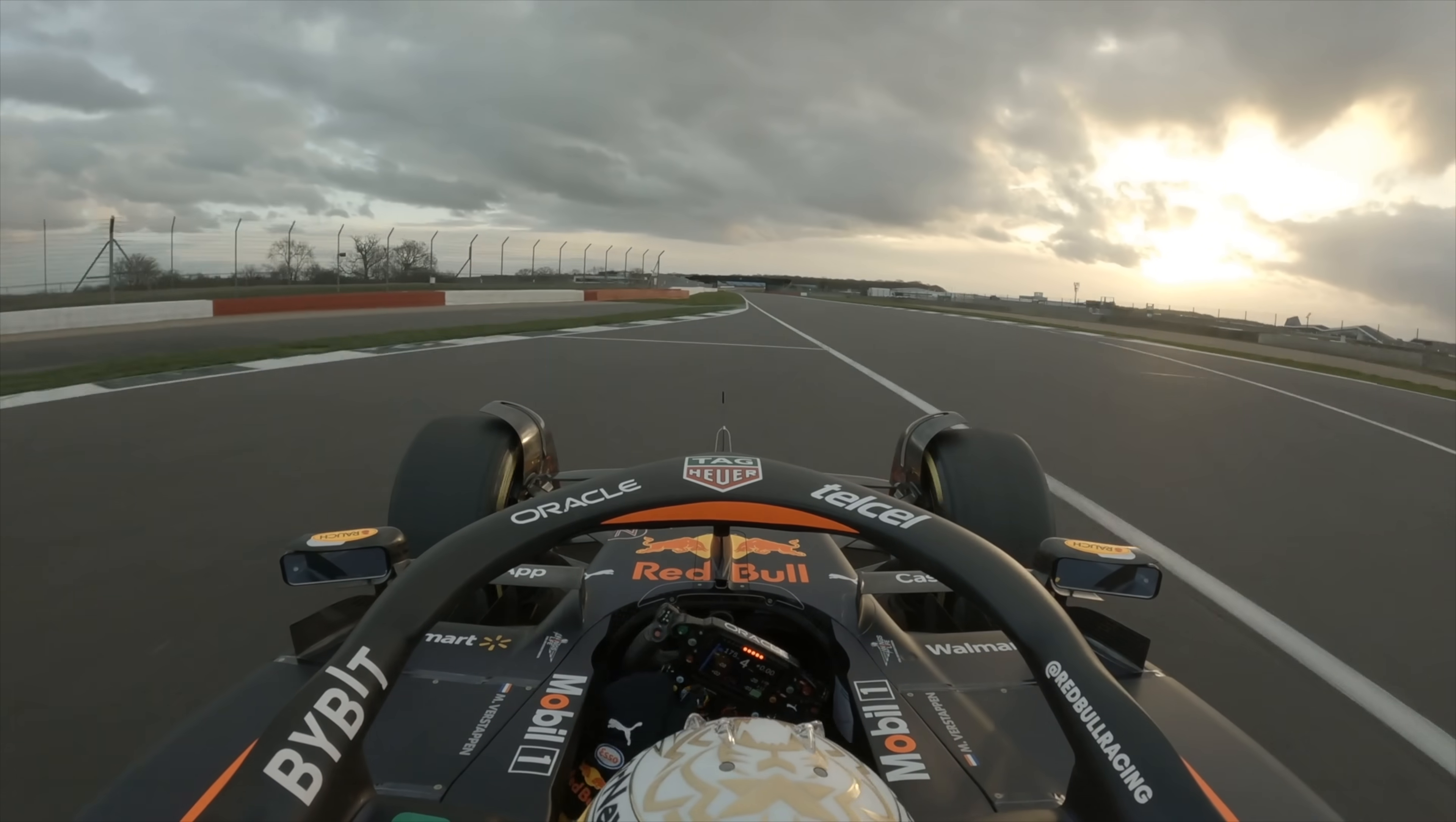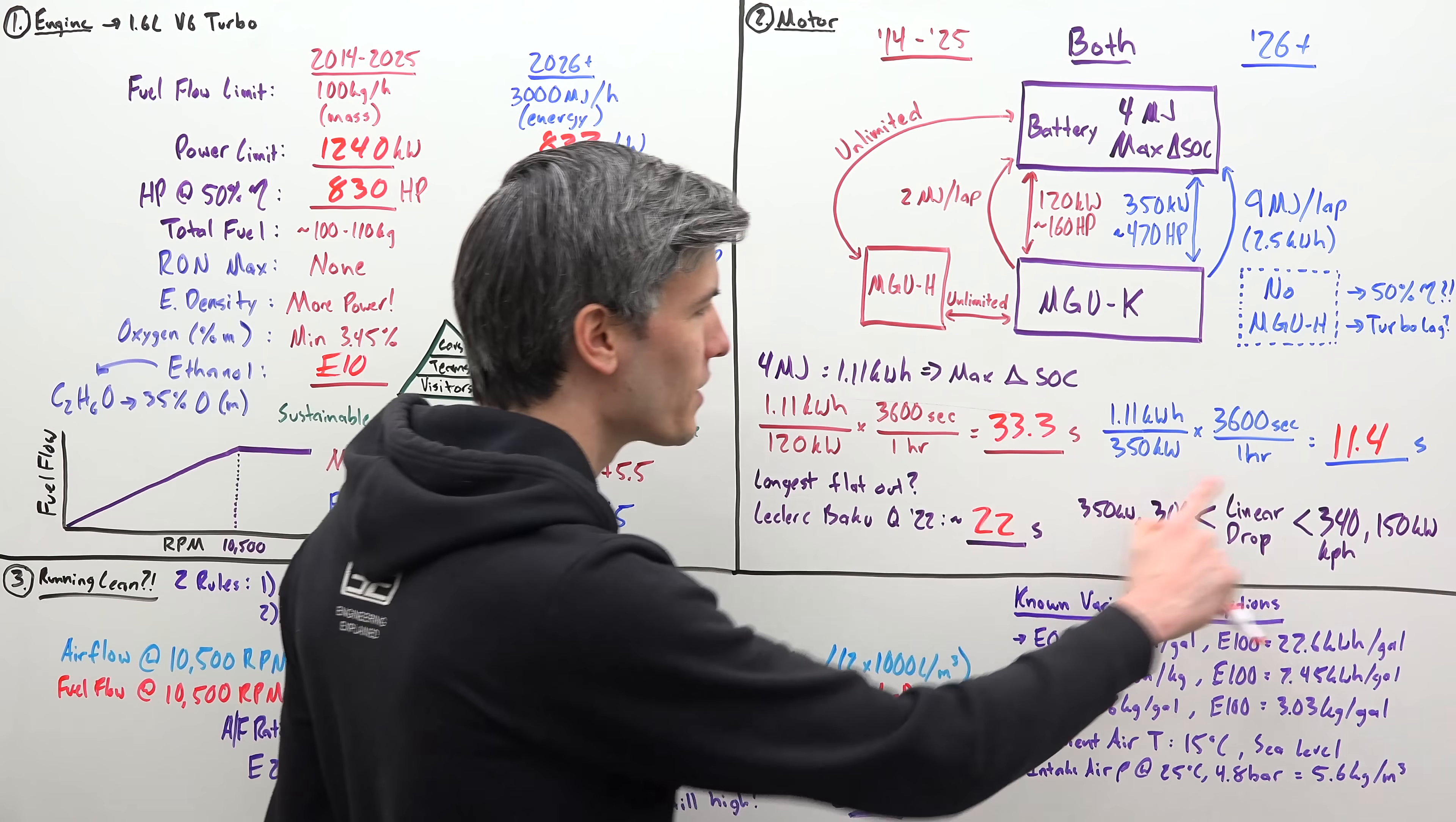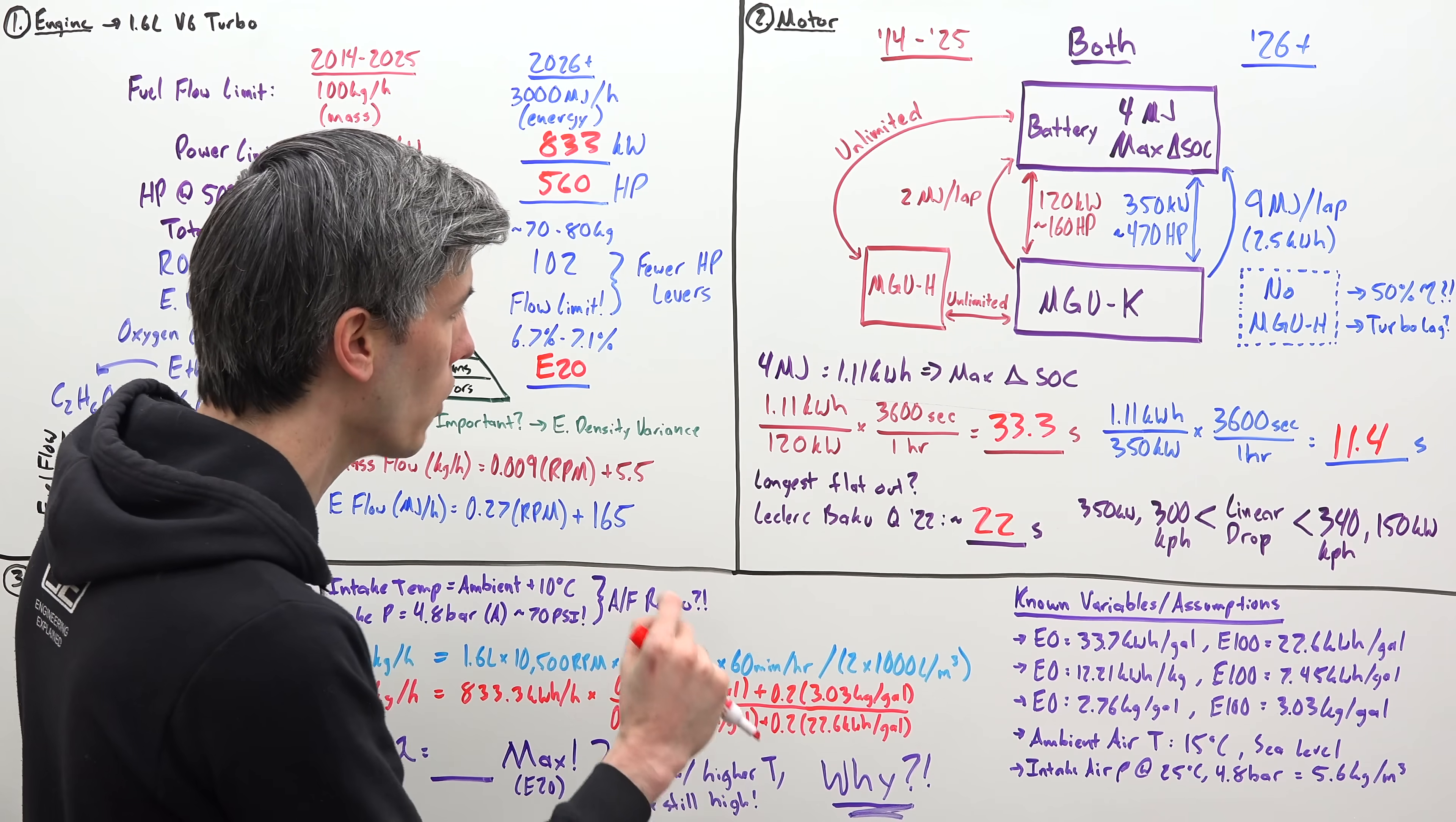But what is that now for the new motor? 350 kilowatts uses up 1.11 kilowatt hours very quickly in just 11.4 seconds. So what's the longest straight in Formula One? I went back and looked at Leclerc's qualifying lap for 2022 in Baku, and there were about 22 seconds that he was accelerating on that long straight. And so if you look at these numbers, it's apparent that you can actually run out of energy from your battery before you get to the end of that straight. So vehicles could potentially be power limited on these long straights with the following generation of cars.